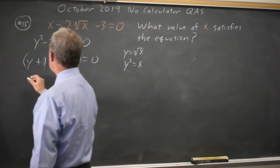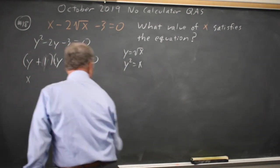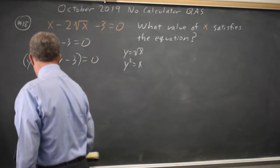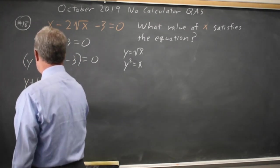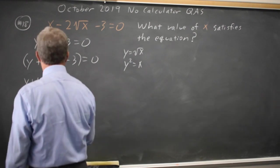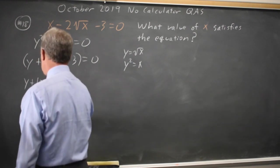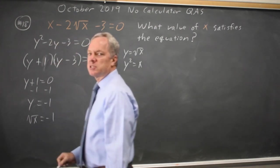So either y plus 1 equals 0, which means y equals negative 1, but y is root x, so that's root x equals negative 1, which does not make sense.